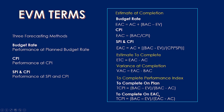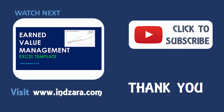A TCPI greater than 1 indicates it will be harder to achieve the target; a TCPI less than 1 indicates it will be easier. Now that we have covered all the terms used in earned value management, let's take a look at the Excel template which will help us calculate these metrics for a project.